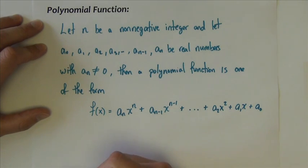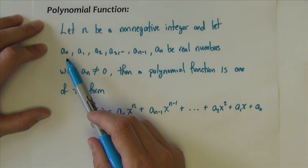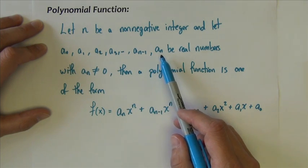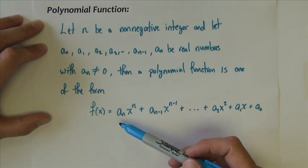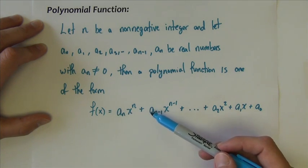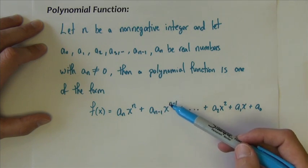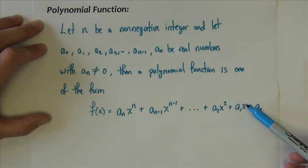A polynomial function is defined as follows: let n be a non-negative integer and let the coefficients a sub 0, a sub 1, a sub 2, and so on out to a sub n be real numbers, as long as a sub n is not equal to 0. Then we write a polynomial function as f of x equals a sub n times x to the n, plus a sub n minus 1 times x to the n minus 1, and we continue decreasing powers of x until we get all the way to the constant term at the very end.